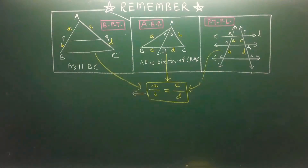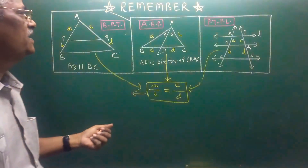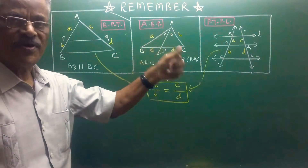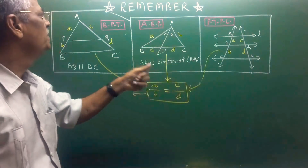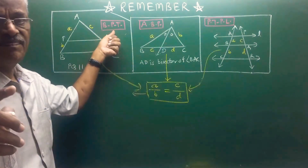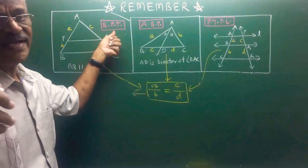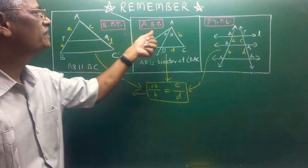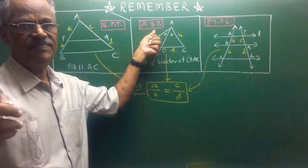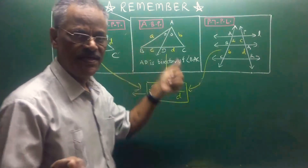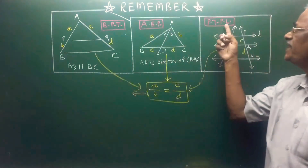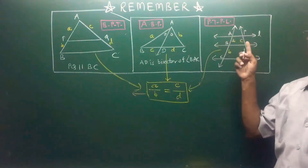Today let us see three important properties: BPT — Basic Proportionality Theorem, ABP — Angle Bisector Property, and the third one, Property of Three Parallel Lines.